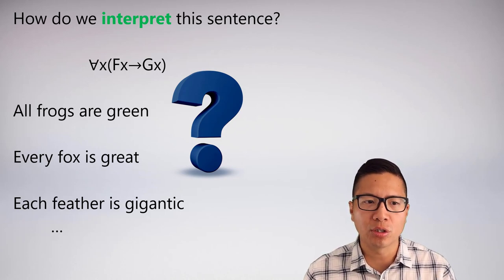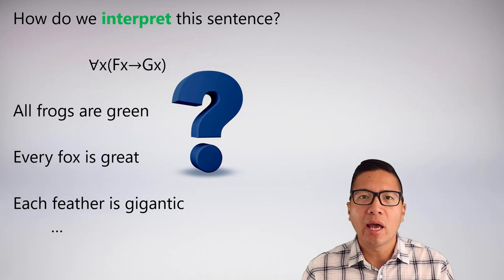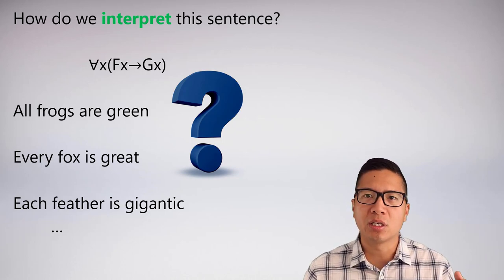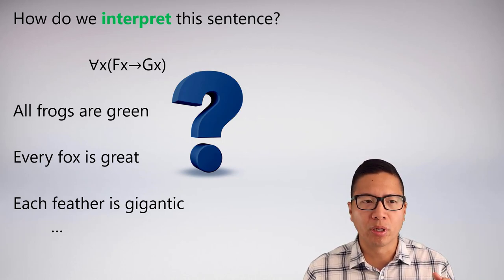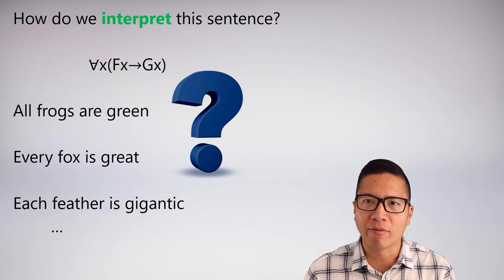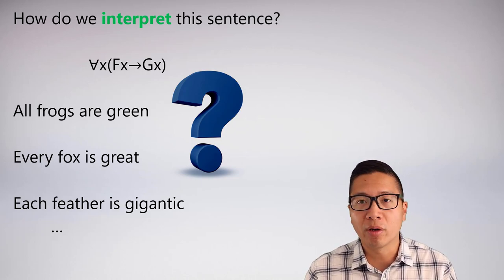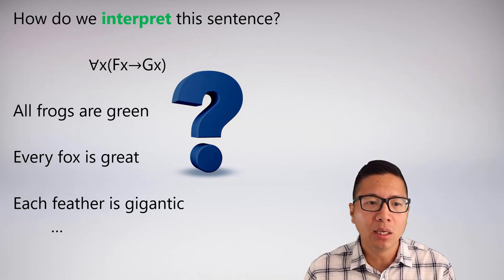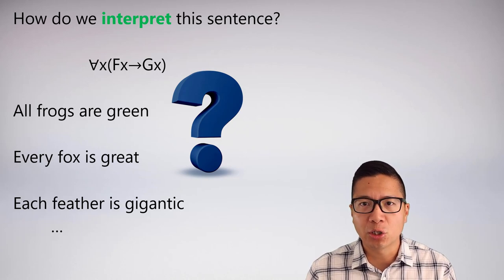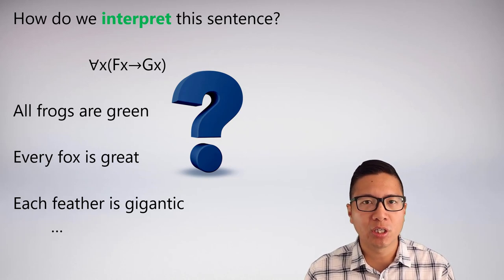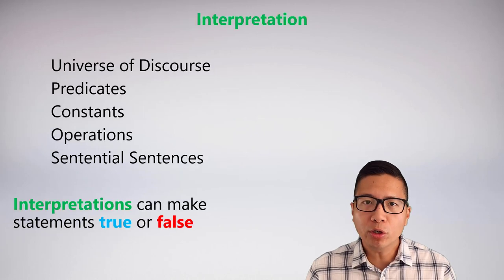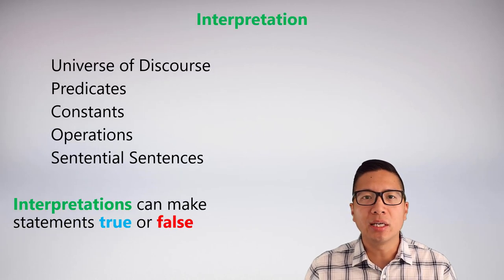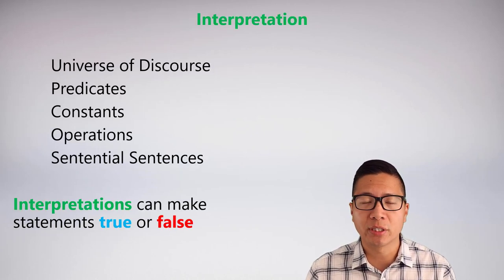What we actually want to do is know how we should interpret particular predicate logic sentences. We need to be able to generate interpretations of things. As we saw in the example from last time, there are many ways to interpret 'for all x, Fx → Gx,' and it depends what F and G really mean. How many interpretations are there? The answer is infinitely many.